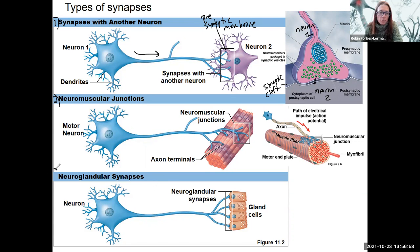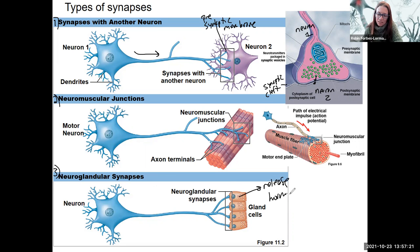Here is another type: neuroglandular synapses. Neurons can also synapse onto glands — and also adipose, though that's more specific. This is a type of synapse where the gland is going to release hormone. So this neuron is going to cause the release of hormone via this synaptic communication. This is another type of synapse.